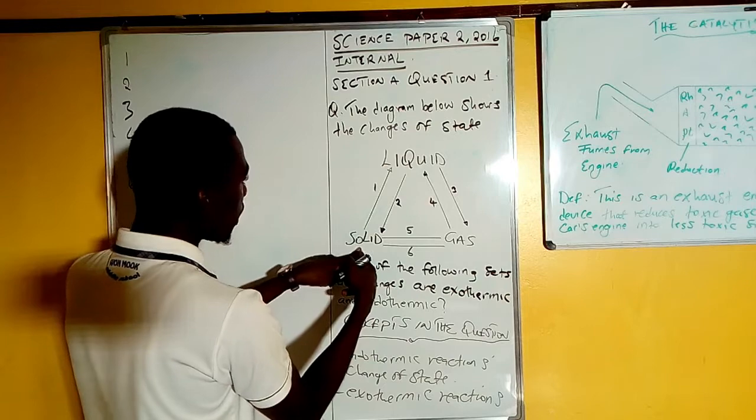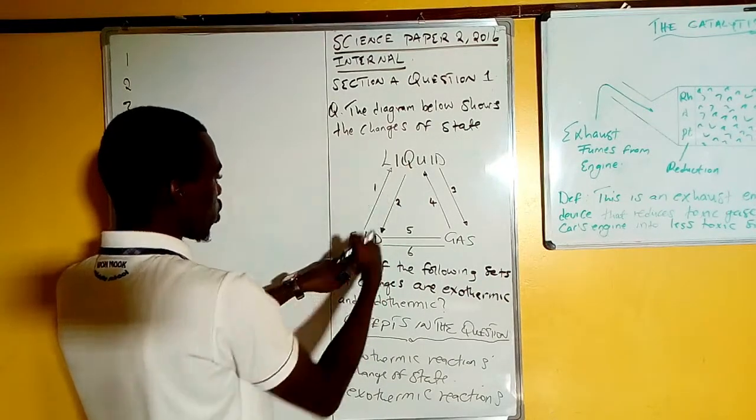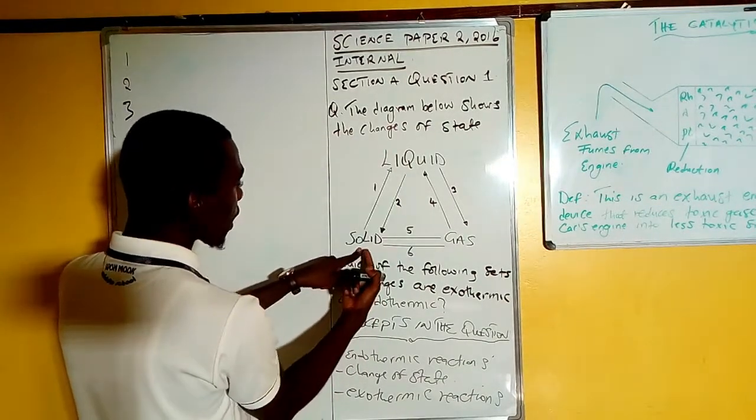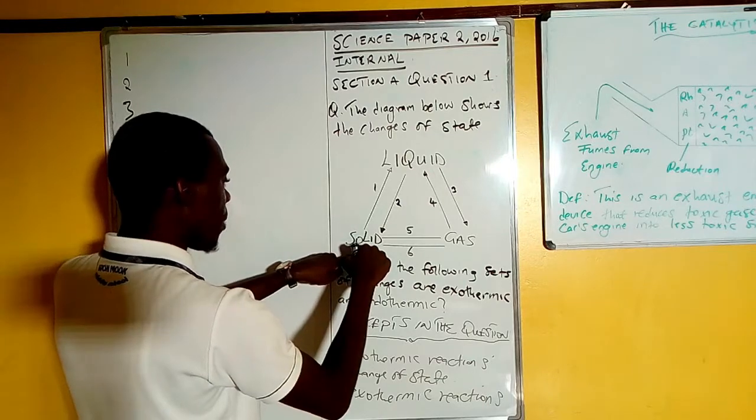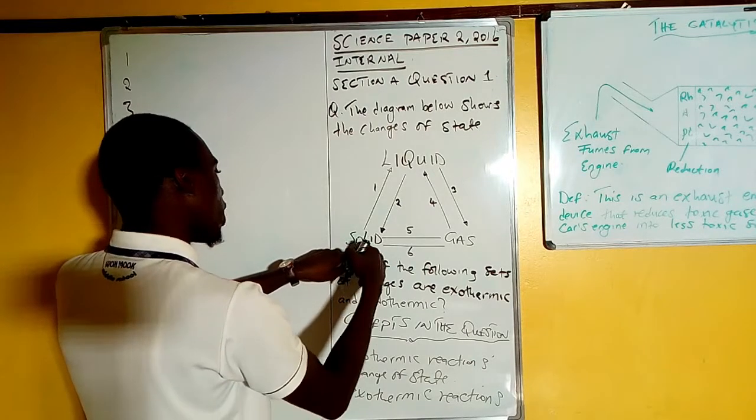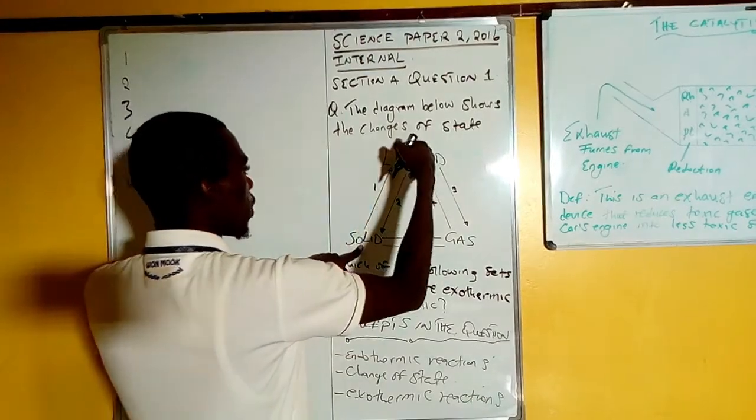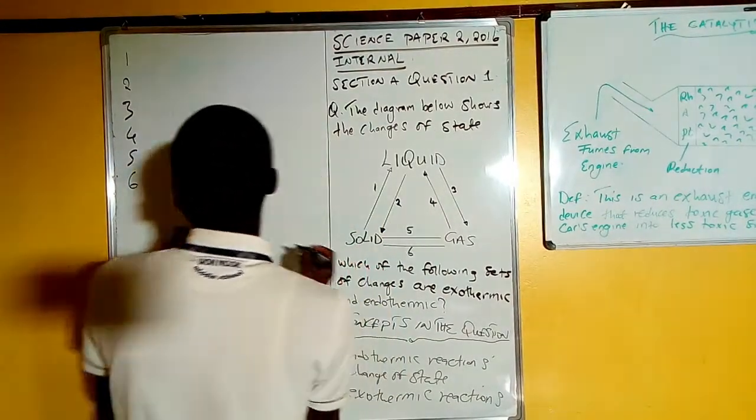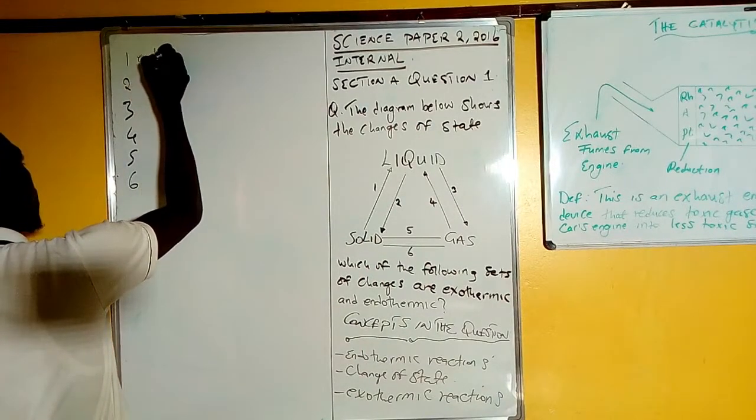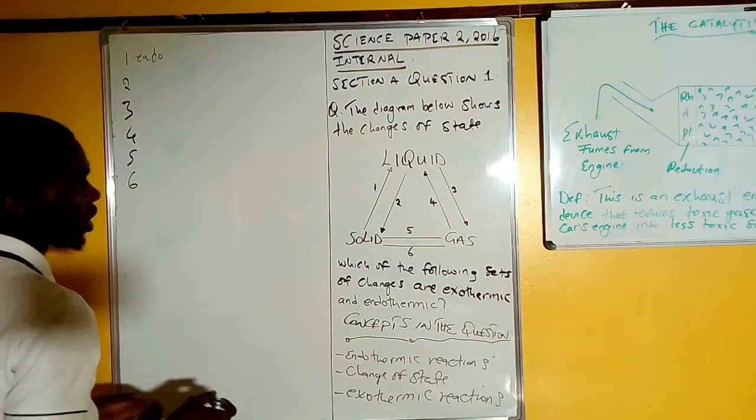Let's explain and see which answer it gives us. Number one: this one is change of state from solid to liquid. From solid to liquid, the only thing that can change is heat was being applied to the solid, so the solid was taking in the heat energy. That's why it changed to liquid. So meaning number one here, this one is an endothermic reaction.